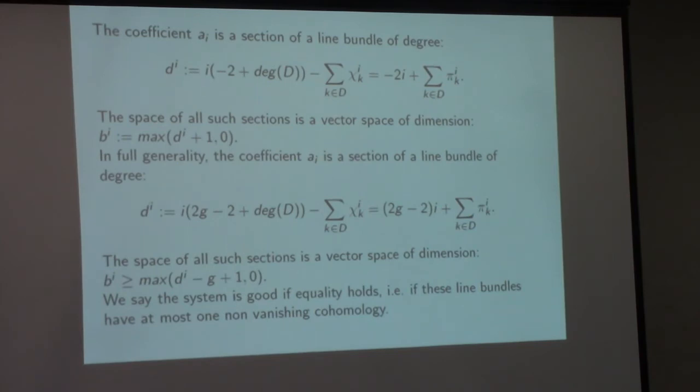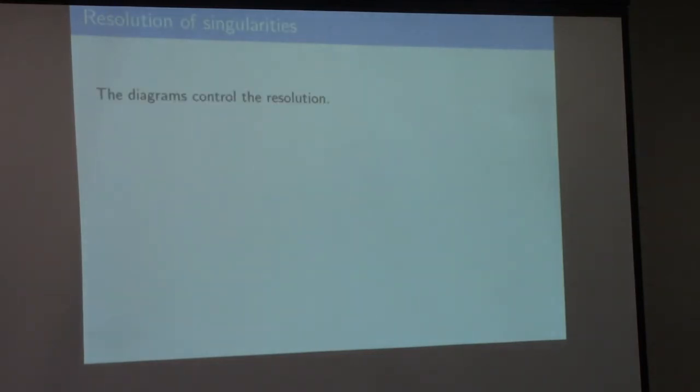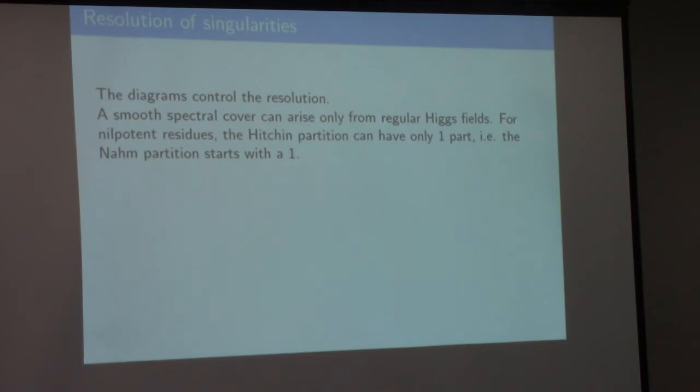I mentioned the good, bad, and ugly. You say the system is good if the equality holds, which roughly corresponds to no higher cohomology for the line bundles. Let's skip the stability statement. You can also write down an explicit algorithm for describing the singularities of spectral covers in terms of the resolution process. The steps in the resolution are encoded in the Hitchin or Nam diagrams that control it.